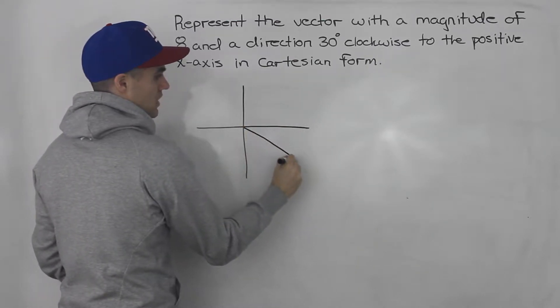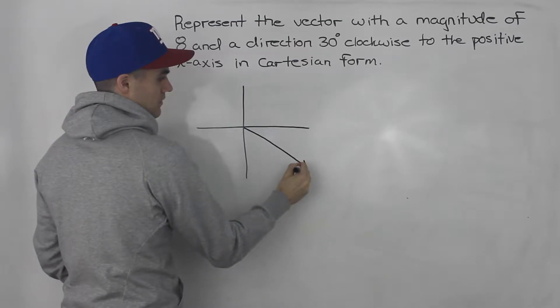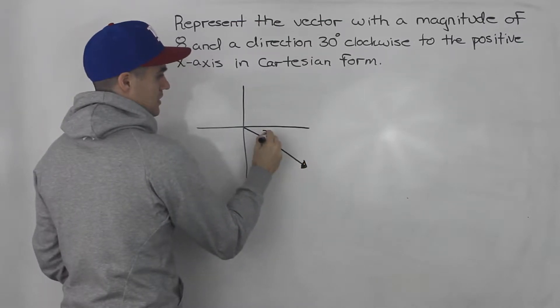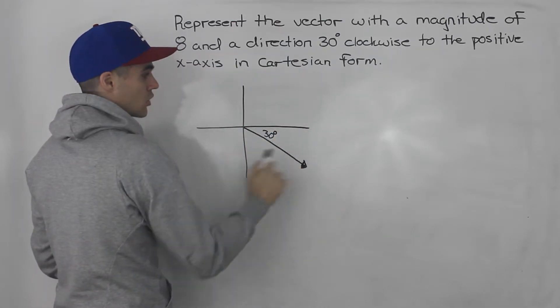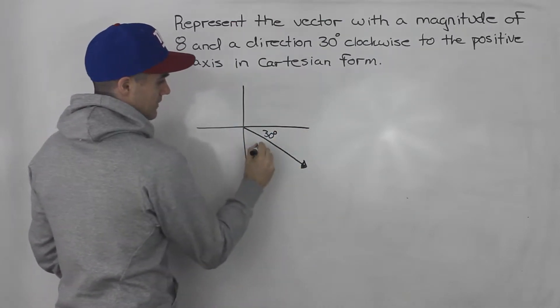So it's going to be right here. And this is going to be 30 degrees. 30 degrees to the positive x-axis clockwise. And this vector here has a magnitude of 8.